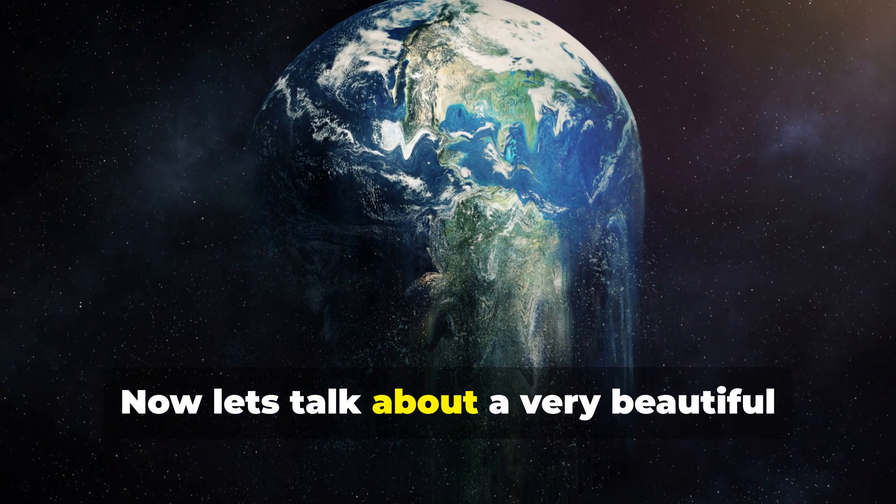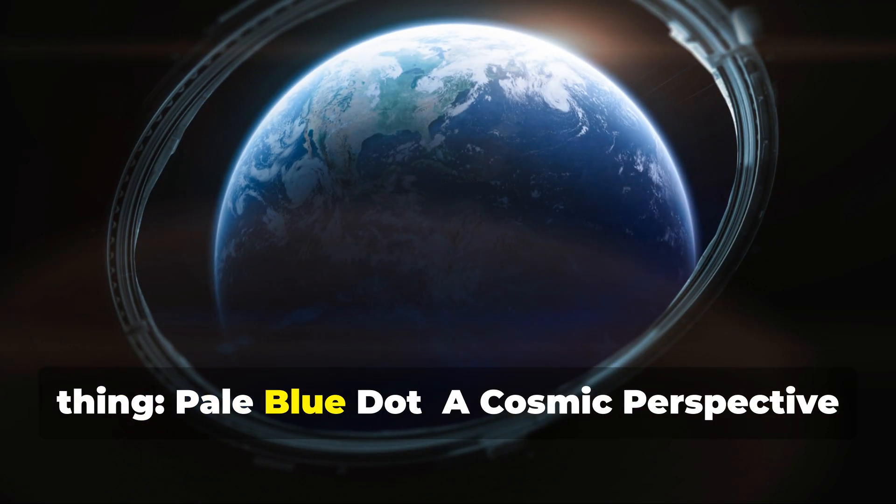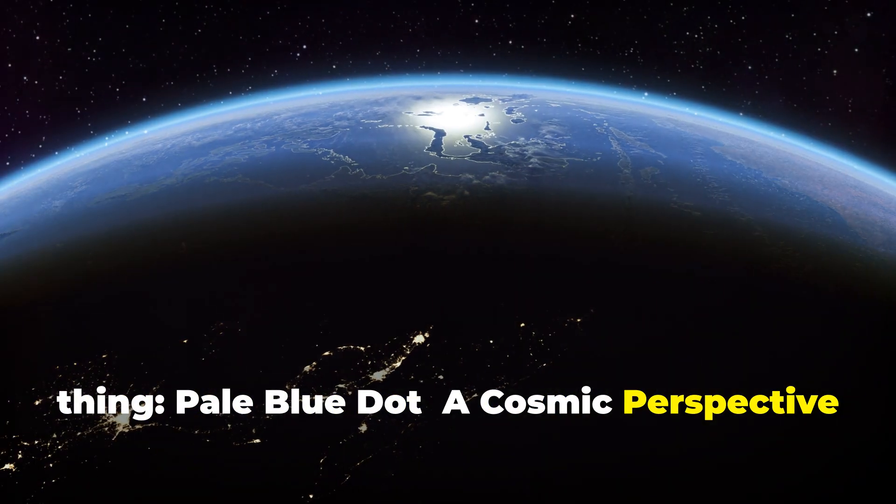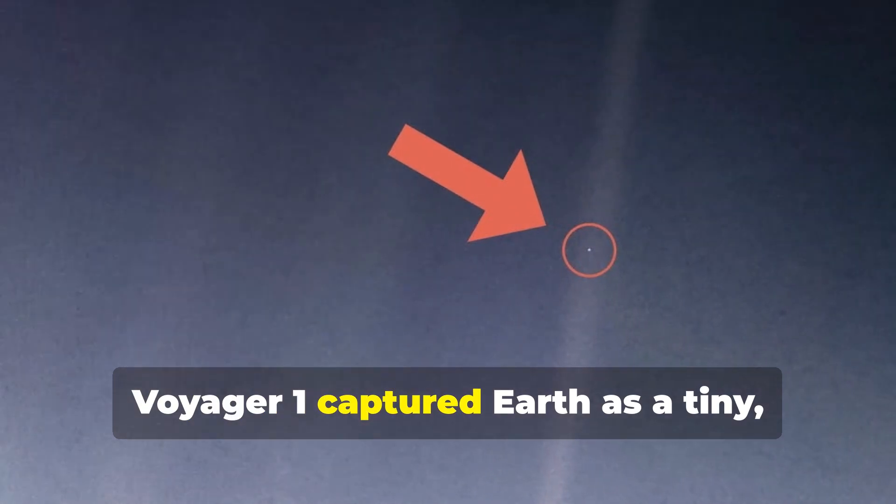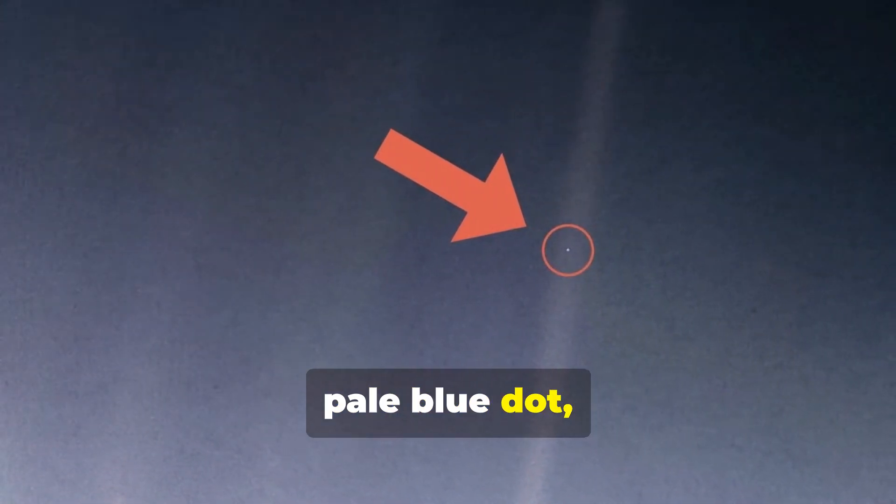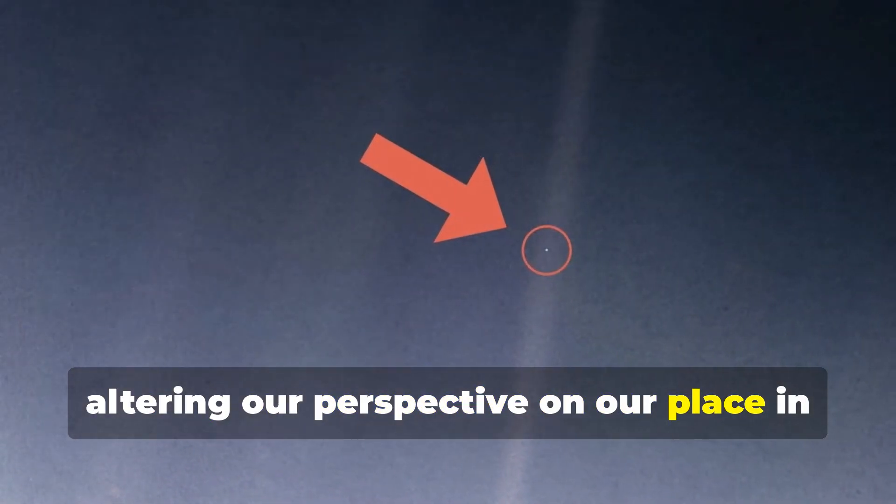Now let's talk about a very beautiful thing, Pale Blue Dot, a cosmic perspective on humanity's place. In 1990, Voyager 1 captured Earth as a tiny pale blue dot, altering our perspective on our place in the cosmos.